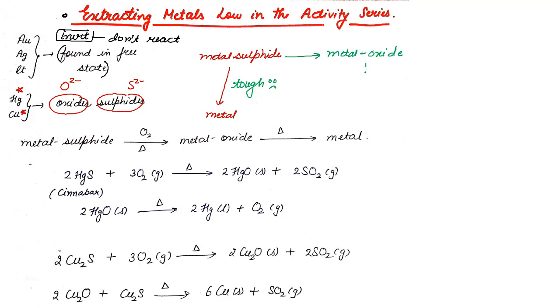And finally, we work with metal oxide, and then the metal oxide could be converted to metal. Okay. So rather than going directly, we'll first convert the metal sulfide to metal oxide. Processes I'll tell you in detail.